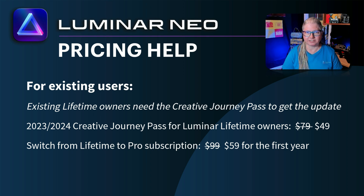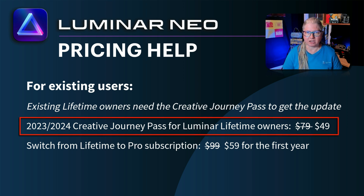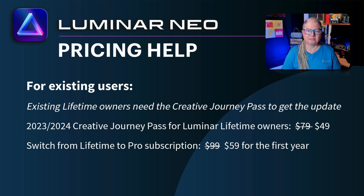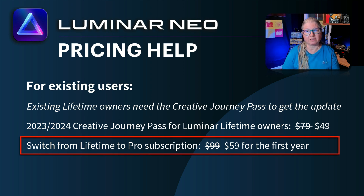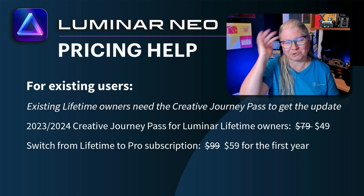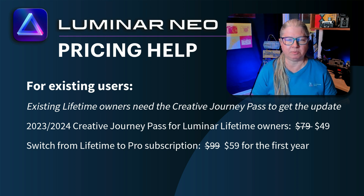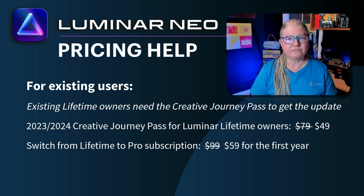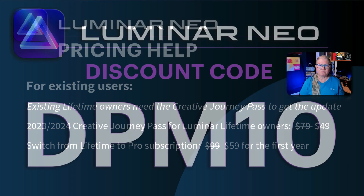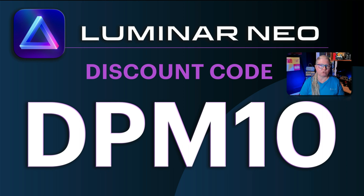You have two choices as an existing owner. First, you can opt for something called the Creative Journey Pass — currently during the back-to-school sale it's $49 US, with a regular price of $79. Second, you can switch from the lifetime license to the pro subscription, currently $59 for your first year. That's confusing, and this is just the tip of the iceberg — there may be other variations depending on what you've bought previously. If you're still not clear, add a comment below. Remember to use my discount code DPM10 to get 10% off when you check out.